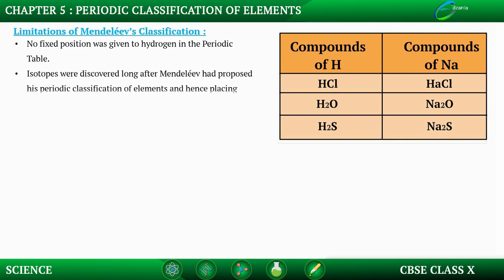Isotopes were discovered long after Mendeleev had proposed his periodic classification of elements, making their placement a challenge. Since there was no concept of isotopes known at that time, no place for isotopes was provided in his table.